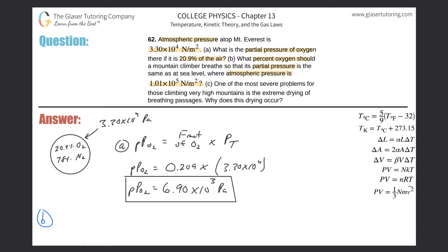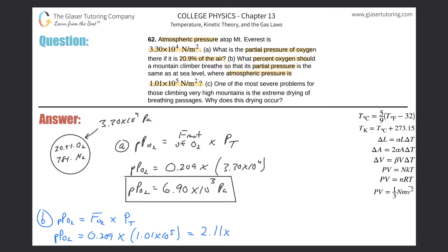Using the same formula, the partial pressure of oxygen at sea level equals the fraction of O2 multiplied by the total pressure at sea level. We assume oxygen is still 20.9 percent, so the fraction 0.209 remains constant. Multiplying 0.209 by 1.01 times 10 to the 5th gives 2.11 times 10 to the 4th pascals — that's the partial pressure of oxygen at sea level.